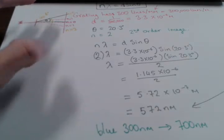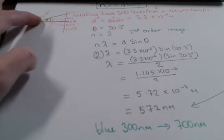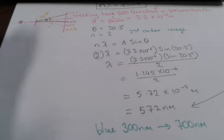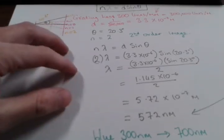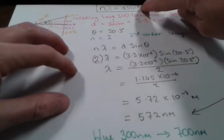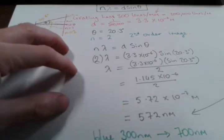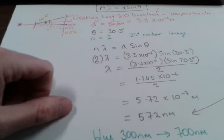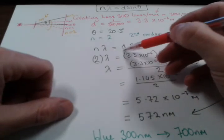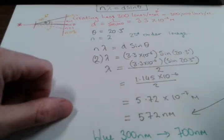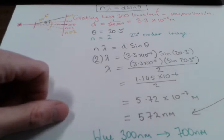So common mistakes there is that people will put in the 40.6 for the angle, even though that's the angle between the two orders. So that's not what theta is in this equation. The theta here is the angle between the straight through and whichever order image you're talking about. Other common mistake - the biggest common mistake here is that for d, people put in 300, which is the most common thing that people do incorrectly with these types of questions.